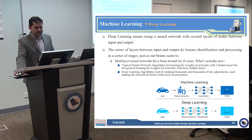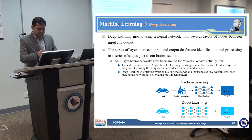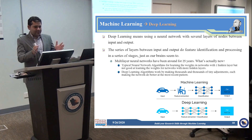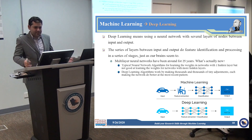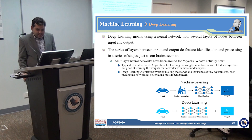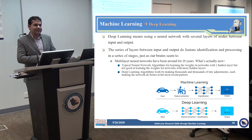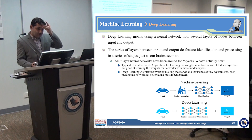Deep learning means using neural networks with several layers of nodes between input and output. Neural networks work based on the brain's concept of learning. Between the input and output layer, you can have several layers — sometimes 20, 50, or even 100 layers — depending on how complex the data or application is. The series of layers between input and output does feature identification and processing in stages, just as our brain seems to do. Multi-layer neural networks have actually been around for about 25 years.